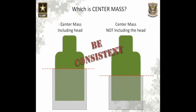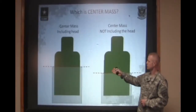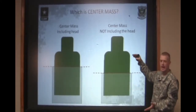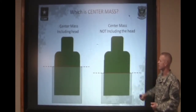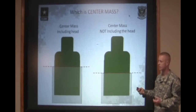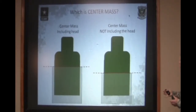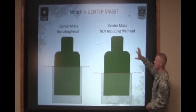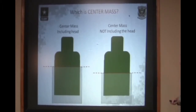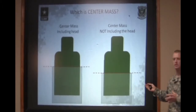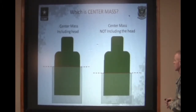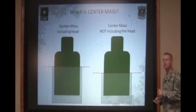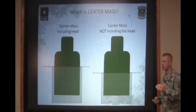Now we have two basic sight pictures. One — the picture on the left — the front sight post is centered on the entire target, including the head. This is what most people see as center mass. The other thing that people see as center mass is holding center mass of the body of the target, not including the head. Either one of these is correct — they're both center mass. The important part of holding a good center mass hold is to ensure you do it the exact same way every single time.